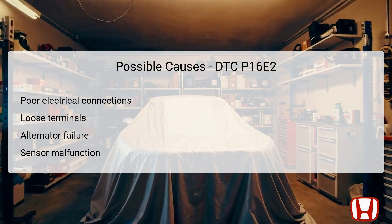There are several possible causes for DTC P16E2. One of the most common issues includes poor electrical connections, which can disrupt communication between the PCM and other components. Loose terminals may also be a contributing factor — any slight disconnection can lead to significant communication errors that trigger this DTC. Alternator failure can hinder its functionality and may compromise its ability to interact correctly with the battery sensor and PCM. Additionally, a malfunctioning battery sensor may not send accurate readings to the PCM, leading to confusion in the LIN communications. Each cause requires careful evaluation to pinpoint the exact problem.